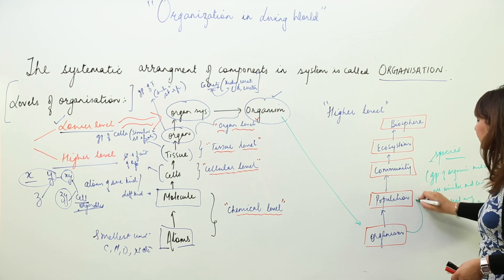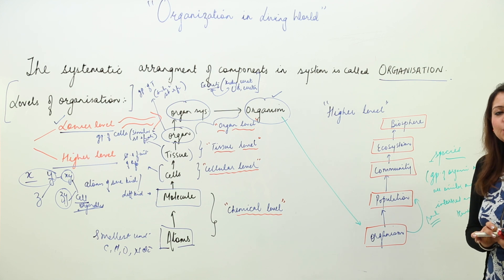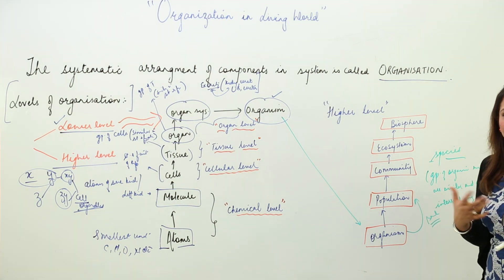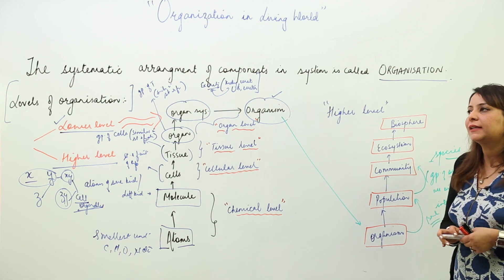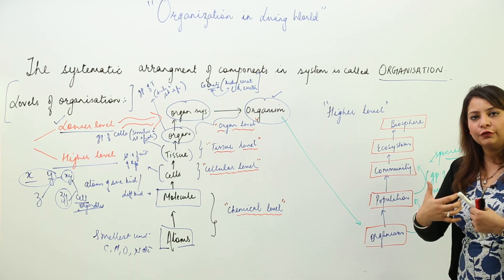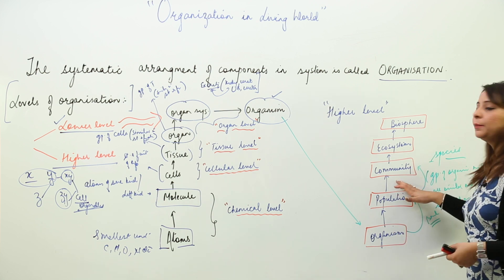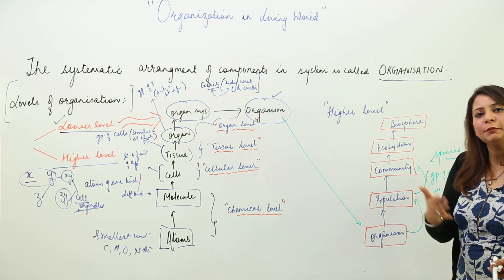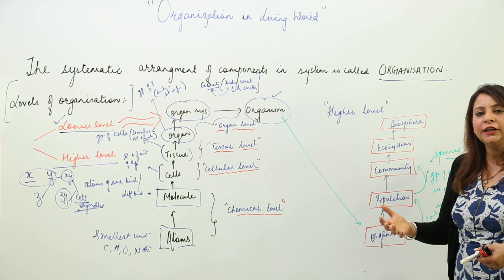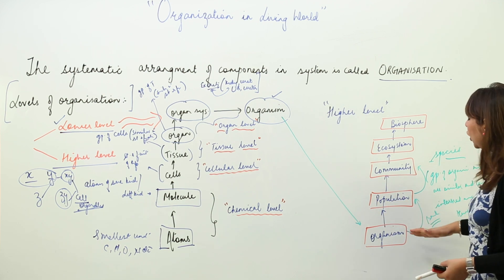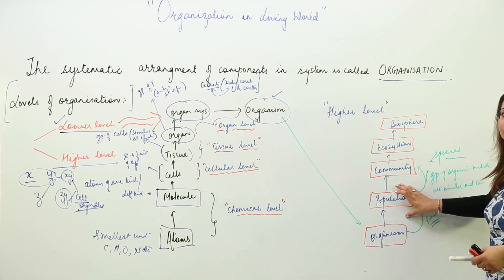Organisms of the same species give rise to a population. Population means organisms of the same species which can interbreed among themselves and depend on each other for some requirements. Different populations — like a population of elephants, cats, and humans — which are living in a defined area with their proper characteristics form a community. For example, a desert community consists of desert plants and animals; an aquatic community consists of aquatic organisms.